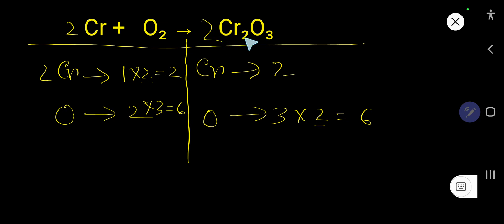Now the number of chromium is 2 times 2 that gives you 4. The number of oxygen is 2 times 3, which is 6. So here you have multiplied by 3, so these 3 will come before this atom, that is here. So 3 times 2 is 6.